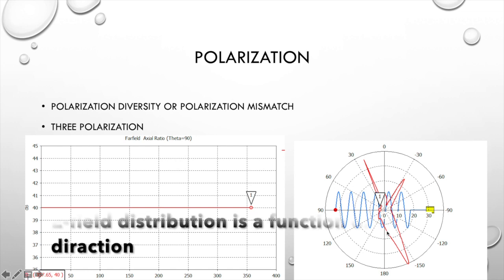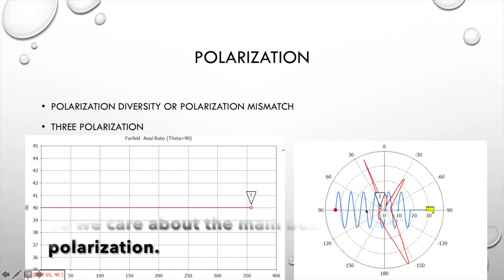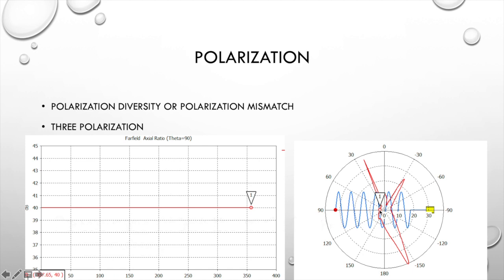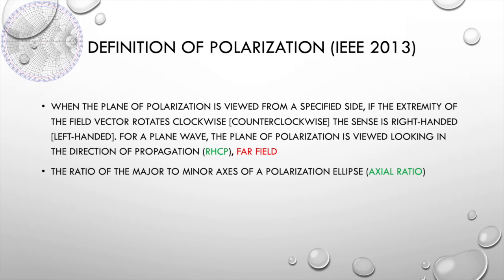As you can see in this figure, in the main beam direction the axial ratio is smaller than 3 dB, so we can regard it as a circular polarized antenna. In this other figure, the axial ratio is larger than 20 dB, so we can regard it as a linear polarized antenna. Circular polarization can be classified as right-hand circular polarization and left-hand circular polarization.